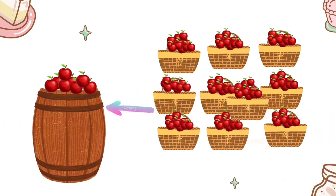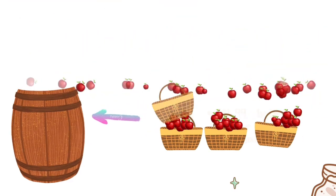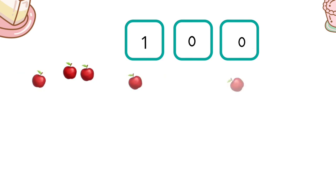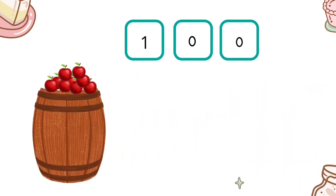You guessed it — this new place is called the hundreds place, because we use it to count groups of 100. Are you starting to see how our base 10 number system works? It uses different number places to represent different sized groups that we use to count — groups of 1, groups of 10, groups of 100, and so on.